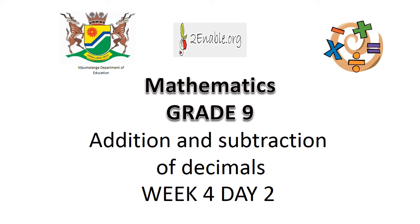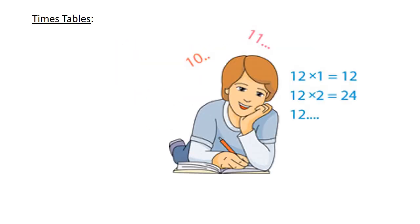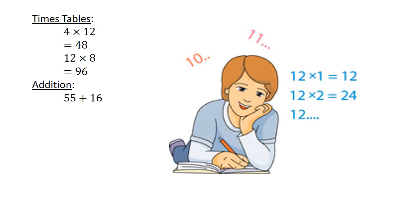Addition and subtraction of decimals. Mental map: times tables — 4 times 12 equals 48, 12 times 8 equals 96. Addition: 55 plus 16 equals 71.